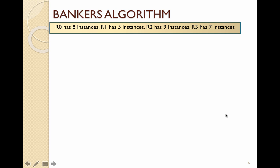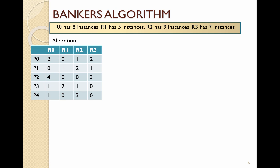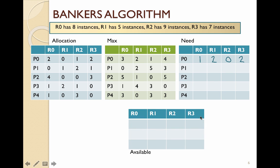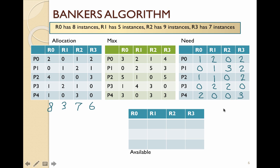Now let's look at the same situation, except R3 only has seven instances instead of eight. The need matrix is calculated the same way, but the available vector changes. Instead of eight instances of R3, we only have seven. So when we subtract the six that have been allocated from seven that exist, the available becomes (0, 2, 2, 1) instead of (0, 2, 2, 2). This is an example of an unsafe state.